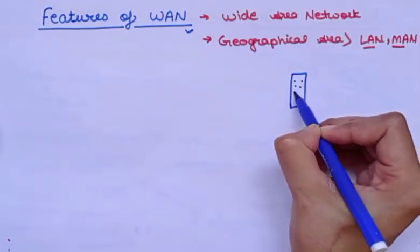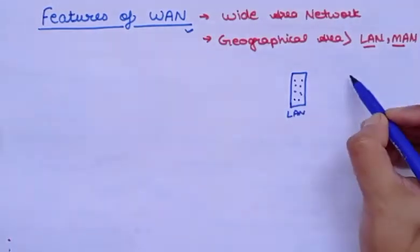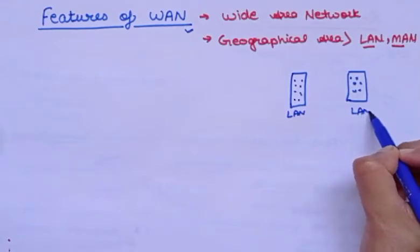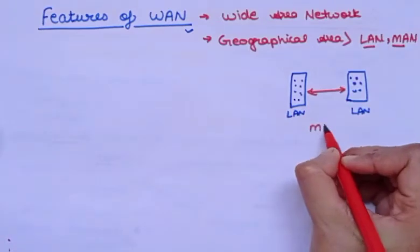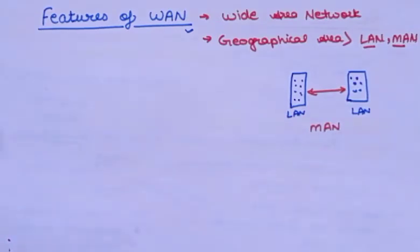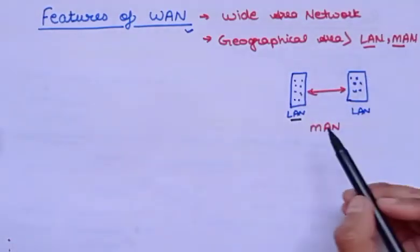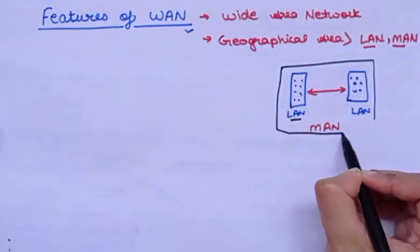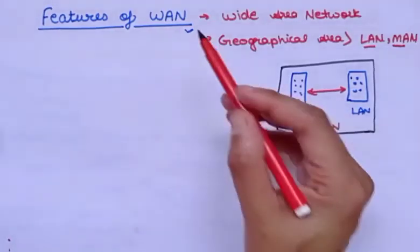In one building there are many computers we can connect through LAN. MAN is a combination of two or more LANs. So LAN covers one building, and when we connect two or more LANs together we get a MAN network, and the geographical area of WAN is higher than that.